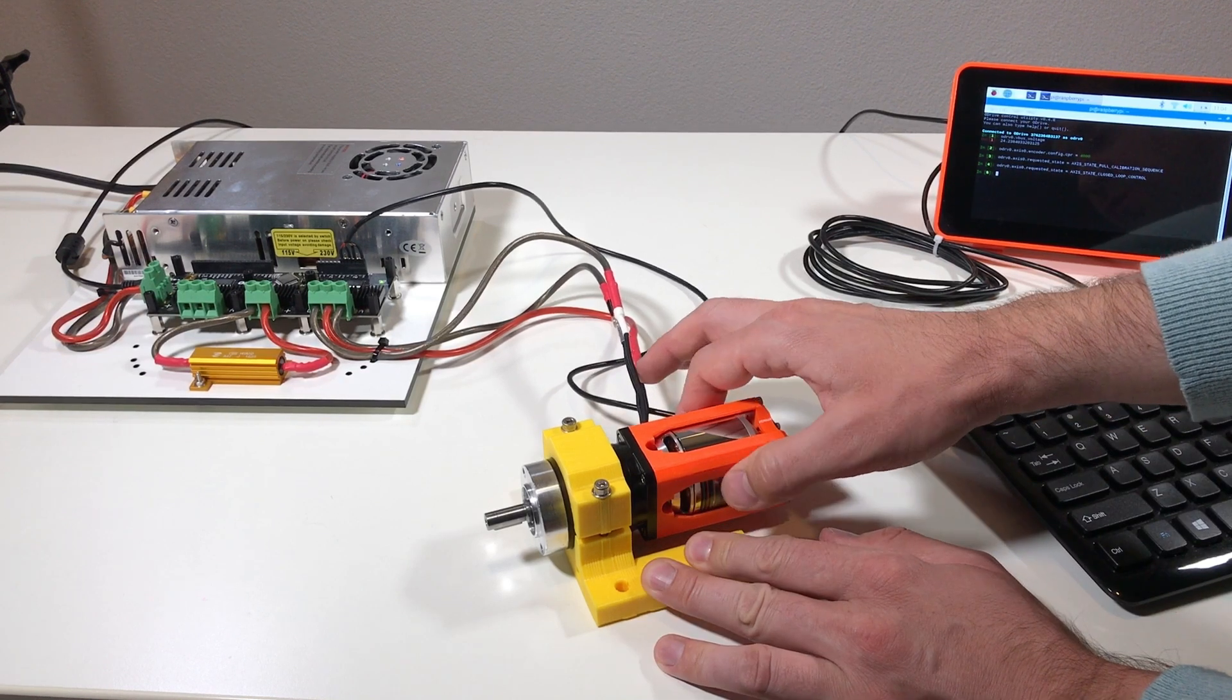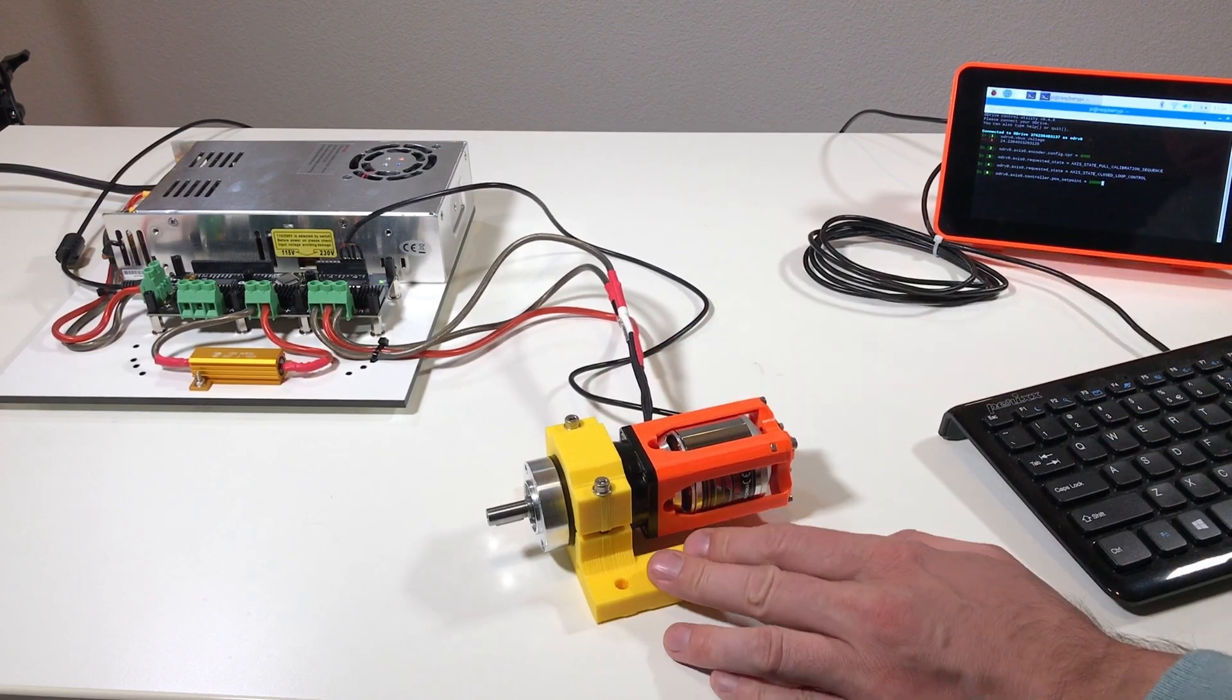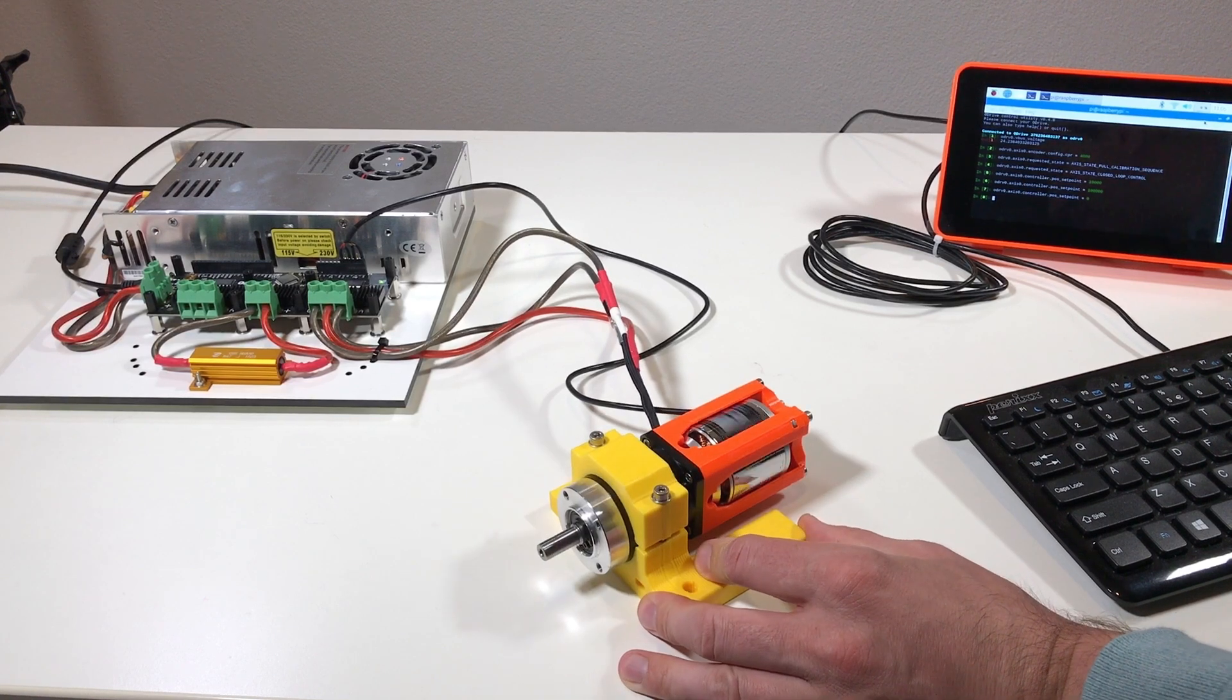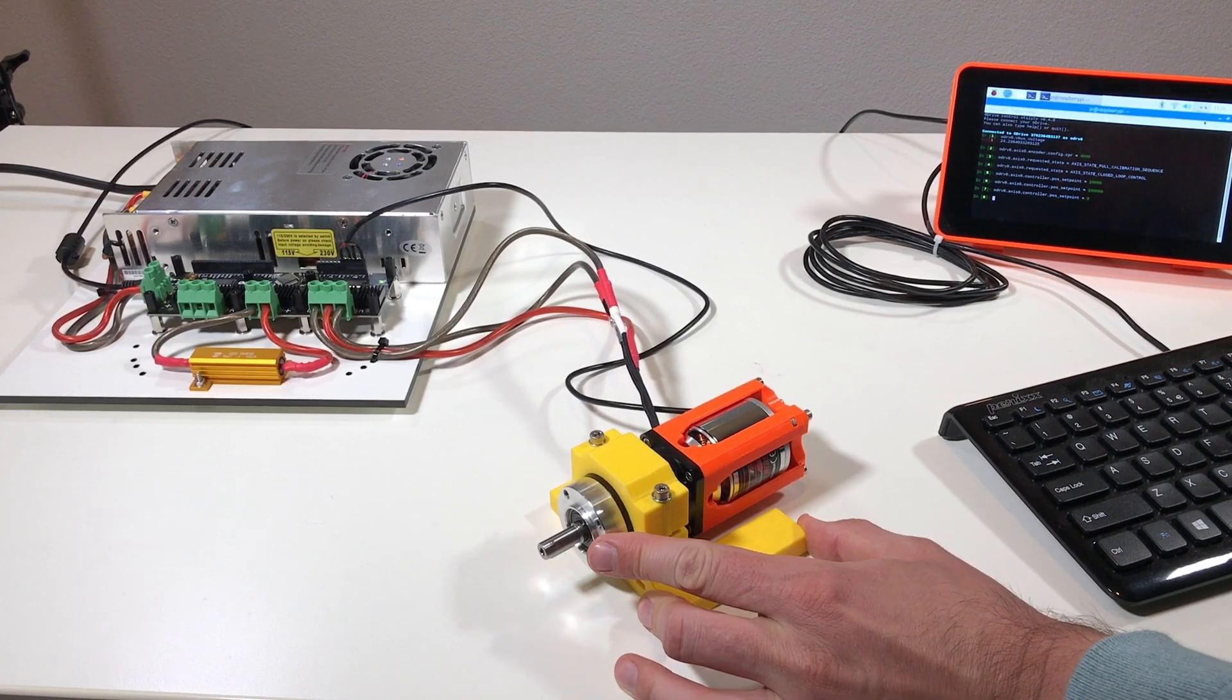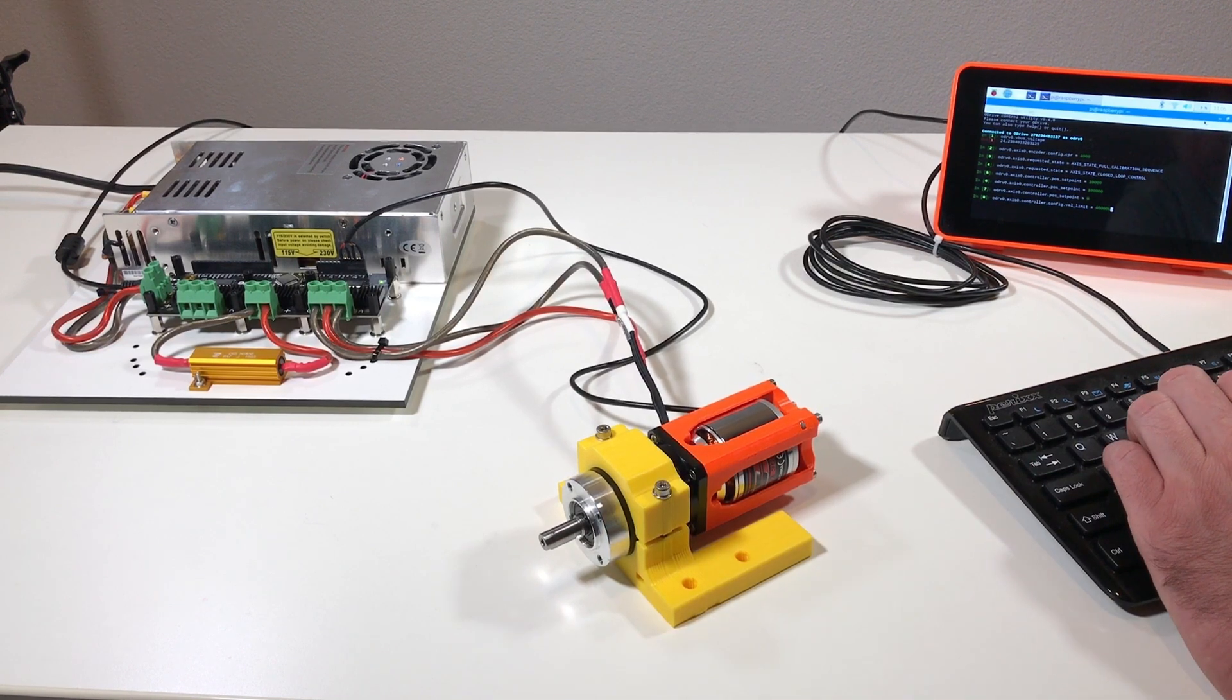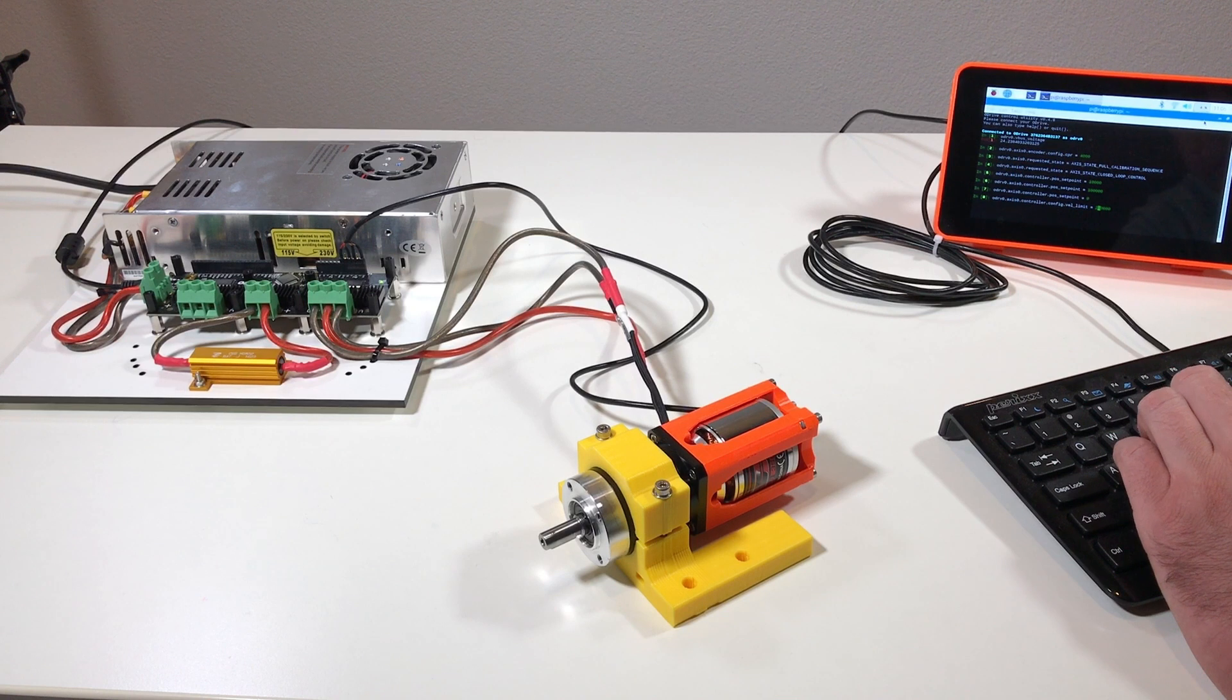So let's put the motor in the closed loop control. This should hold the motor. Yes, the motor holds its position. So let's do set point 10,000. It works. Set point 100,000. Set point zero. The shaft also rotates. So let's increase the speed. Let's put velocity limit at 200,000 and set position 100,000. Set position zero.